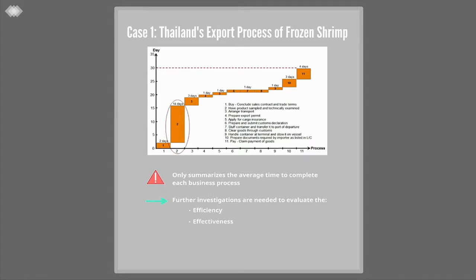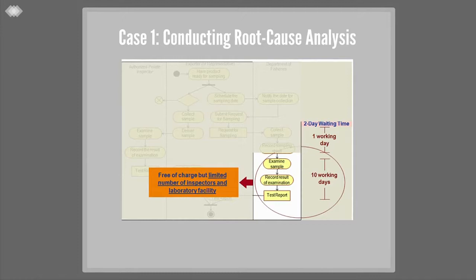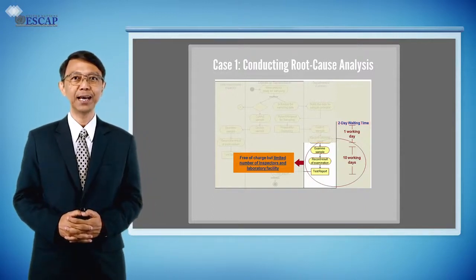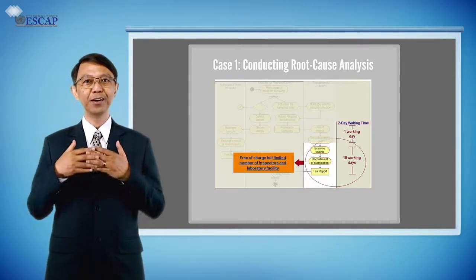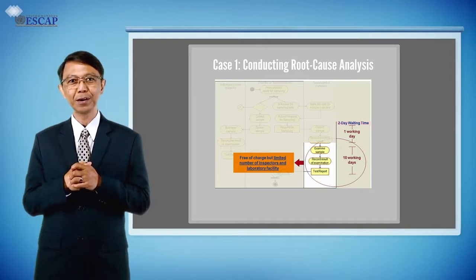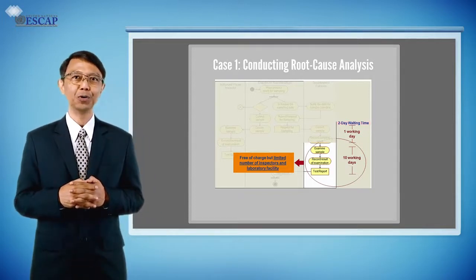The activity diagram and the corresponding process description of the 'half product sample and examine' process show that it takes about 14 days to complete. Root cause analysis further indicates that the substantive delay is due to resource constraints — in terms of both laboratory technicians and facilities in the Department of Fisheries. Further root cause analysis also identifies that the government has a policy to limit the number of government officials and budget. In some other cases, bottlenecks and documentary complexity may not be obvious; however, this does not mean those processes do not have bottlenecks or room for improvement.